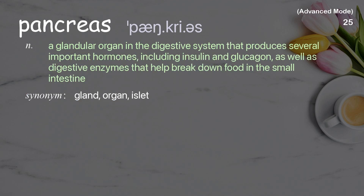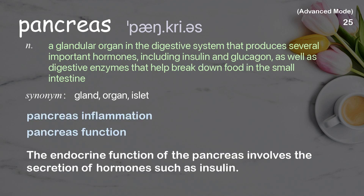Pancreas: a glandular organ in the digestive system that produces several important hormones, including insulin and glucagon, as well as digestive enzymes that help break down food in the small intestine. Examples: pancreas inflammation, pancreas function. The endocrine function of the pancreas involves the secretion of hormones, such as insulin.